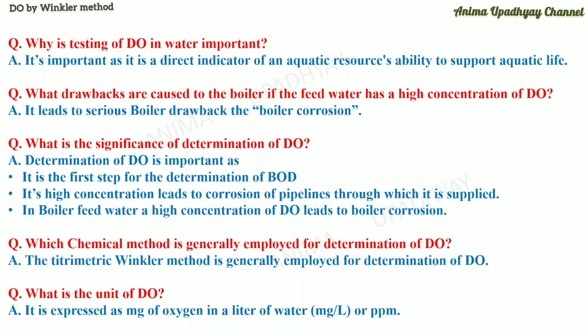Which chemical method is generally employed for determination of D-O? It is the titrimetric Winkler method which is employed for the determination of D-O. What is the unit of D-O? It is expressed as milligrams of oxygen per litre of water, or in parts per million, ppm.